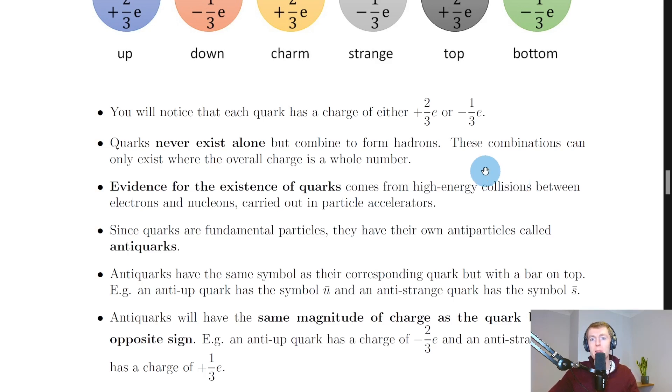We never find quarks by themselves—they're always in combinations to form hadrons, where the overall charge on the hadron is a whole number like zero, one, or minus one.